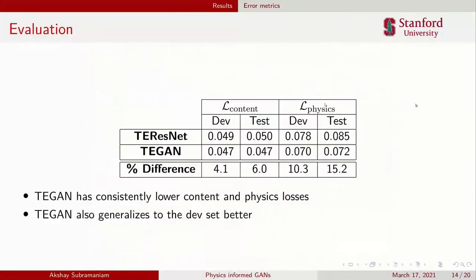More quantitatively, if you look at content and physics losses and compare the GAN versus just the RESNET model, you see the GAN outperforms the RESNET in all metrics. Most importantly, in the physics losses, when you go to the test set, the GAN helps it generalize much better to data that is unseen, and you see a pretty significant difference in terms of physics compatibility.